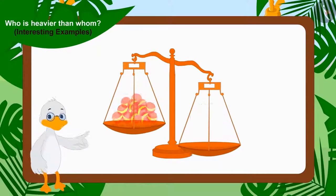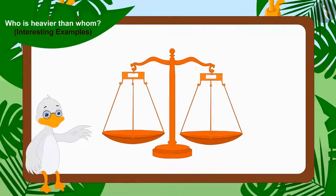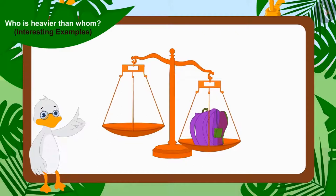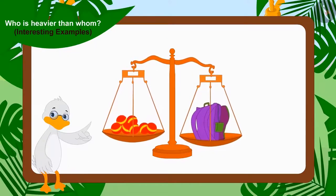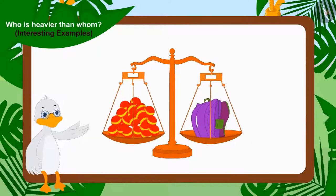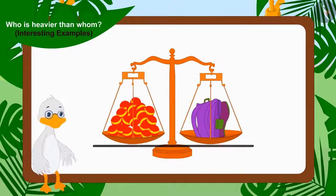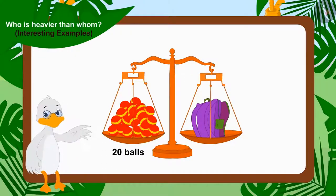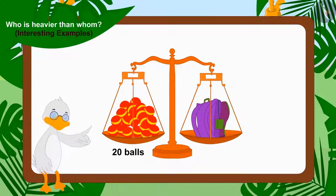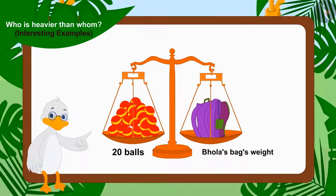Uncle then removed Sheer Khan's bag and the balls. Now, on one side of the scale, Uncle kept Bhola's bag and on the other side started placing balls one by one. Once again, both plates reached the same level, but this time there were twenty balls in the plate. This means that the weight of twenty balls equals the weight of Bhola's bag.